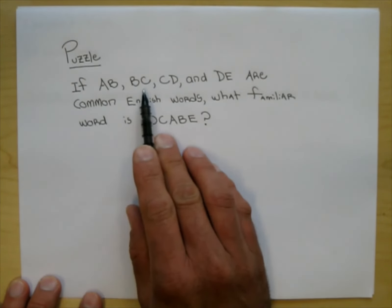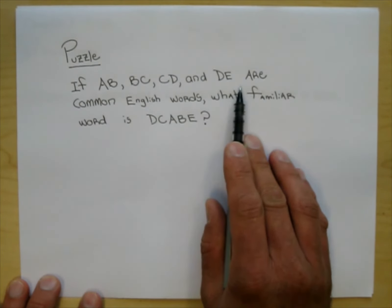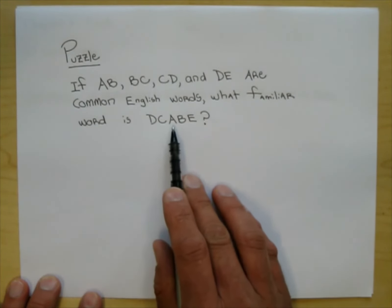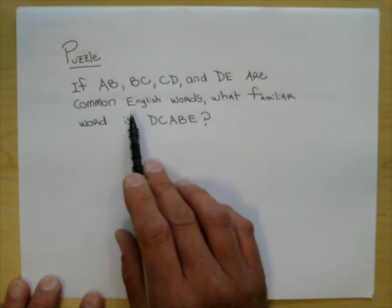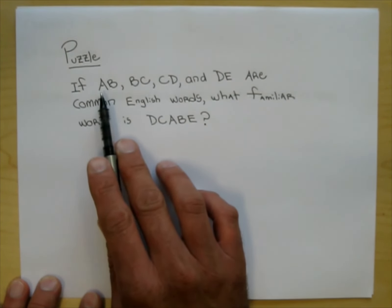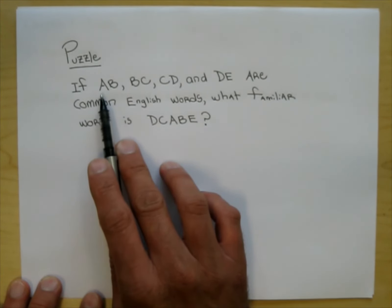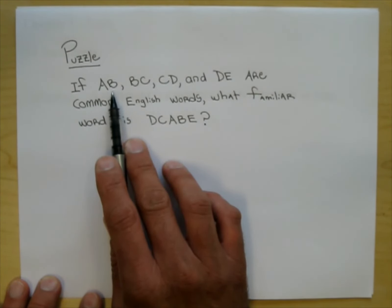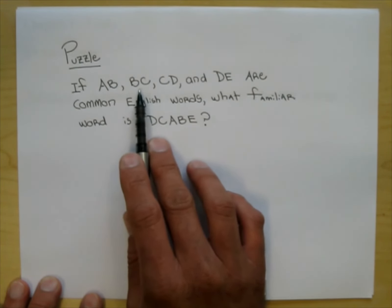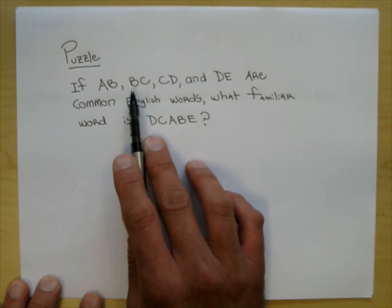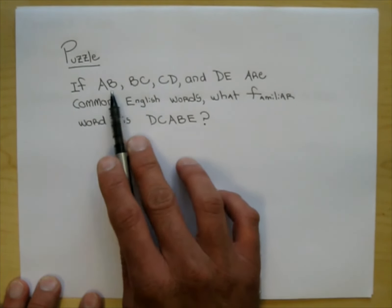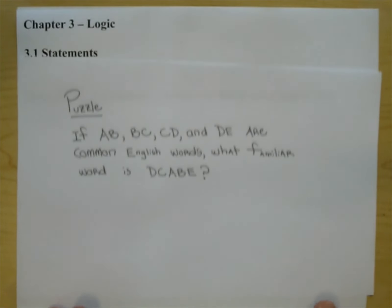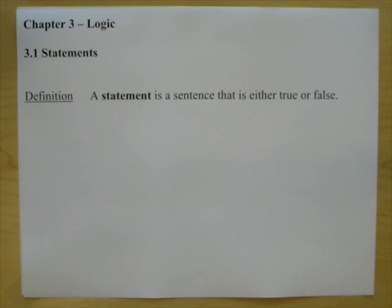If A,B; B,C; C,D; and D,E are common English words, what familiar word is D,C,A,B,E? There's a substitution going on here — perhaps A,B is a two-letter word, maybe 'to' — T, O — and then B,C would have to be a two-letter word that starts with O. Maybe that's not it. Figure this out if you want. We'll get the answer at the end.